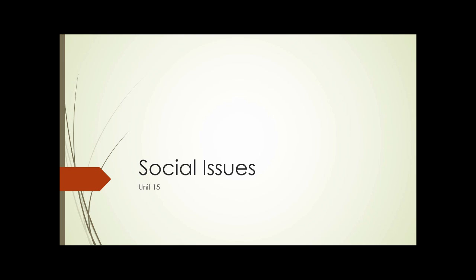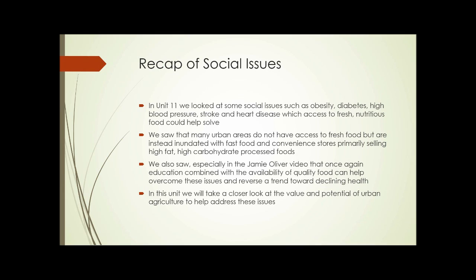Unit 15: Social Issues. We're going to do a really quick recap. In Unit 11 we looked at social issues such as obesity, diabetes, high blood pressure, stroke, and heart disease, which access to fresh nutritious food could help solve. We also saw that many urban areas do not have access to fresh food but are instead inundated with fast food and convenience stores primarily selling high fat, high carbohydrate processed foods. We also saw, especially in the Jamie Oliver video, that education combined with the availability of quality food can help overcome these issues and reverse a trend towards declining health. In this unit we'll take a closer look at the value and potential of urban agriculture to help address these issues.